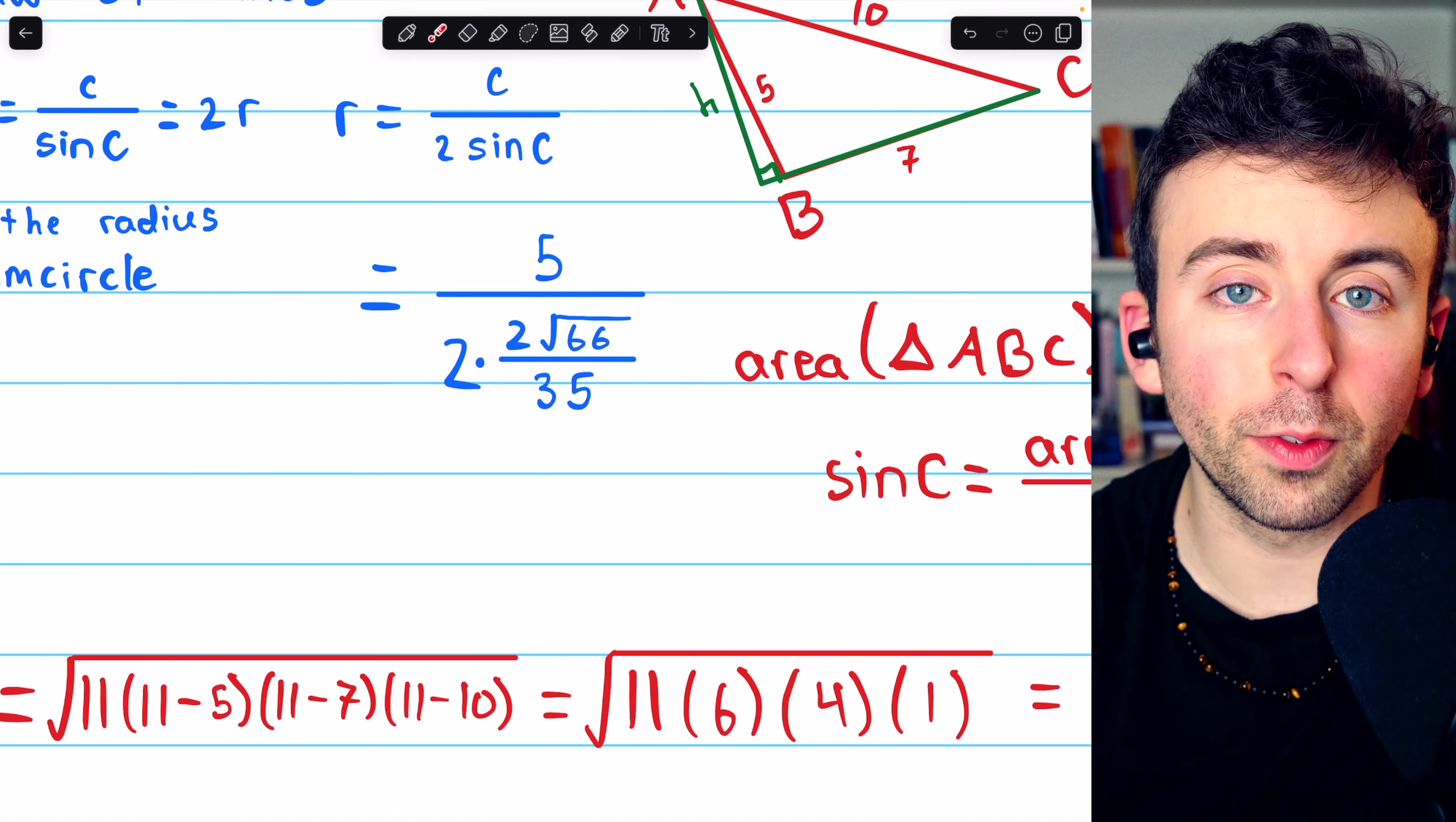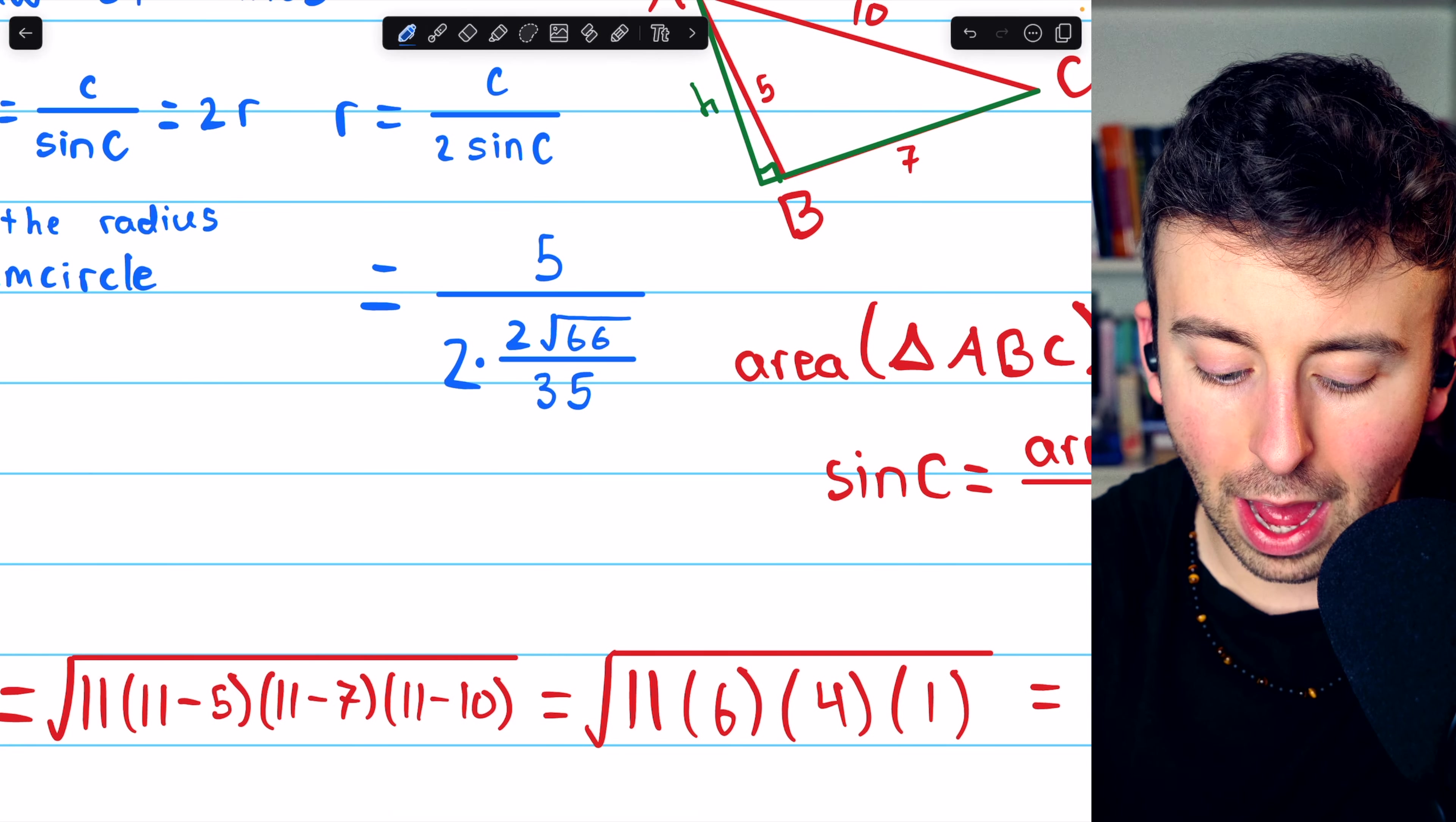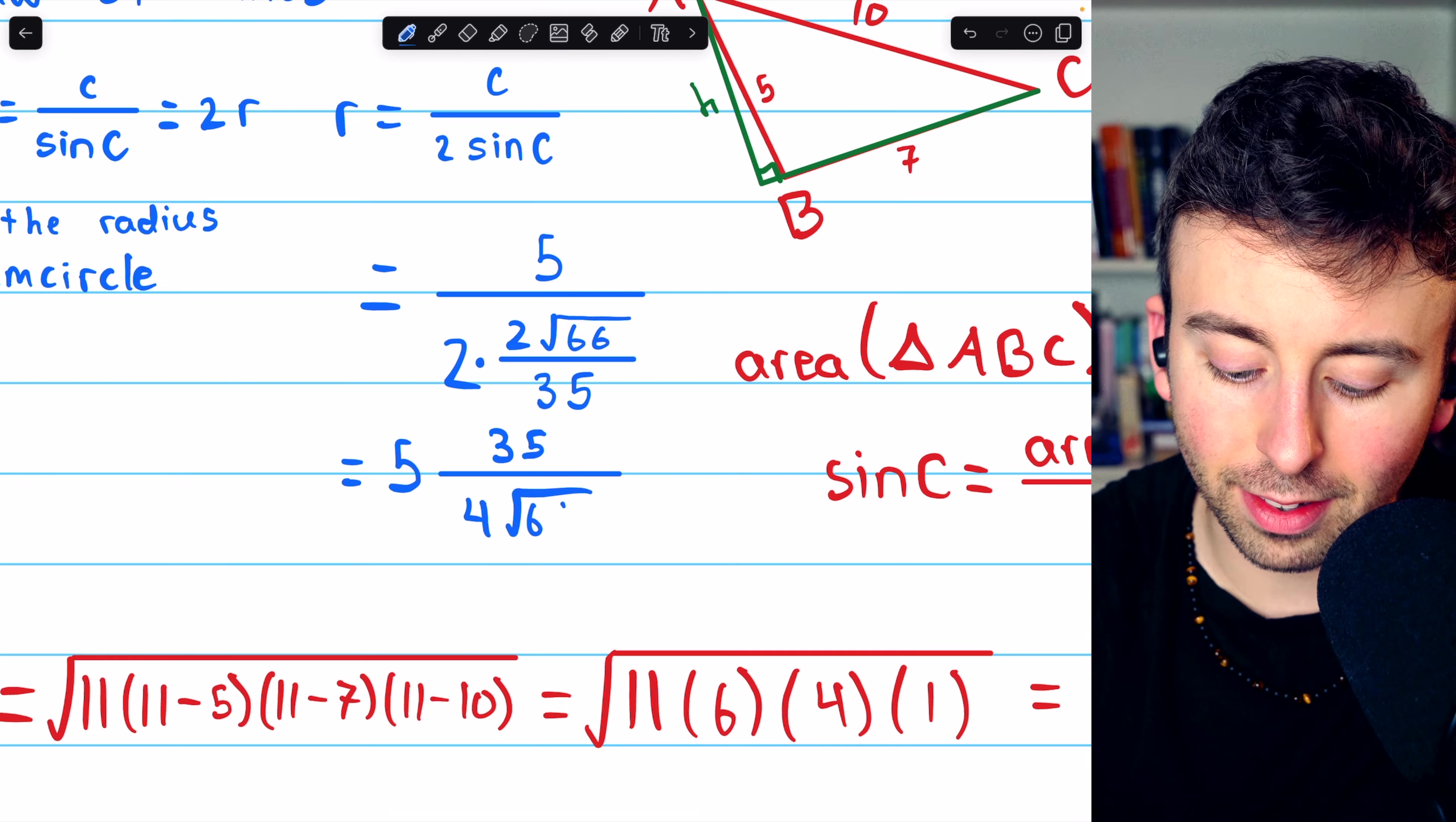2 times 2 is just 4, and we are dividing 5 by this fraction. That's the same as multiplying by the reciprocal. So this is going to be 5 multiplied by 35 over 4 times the square root of 66.